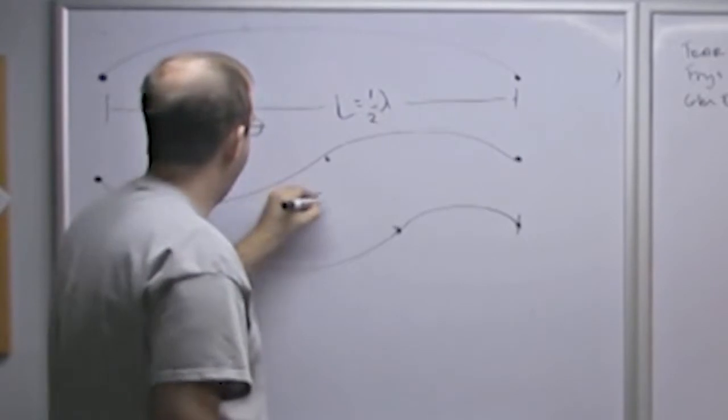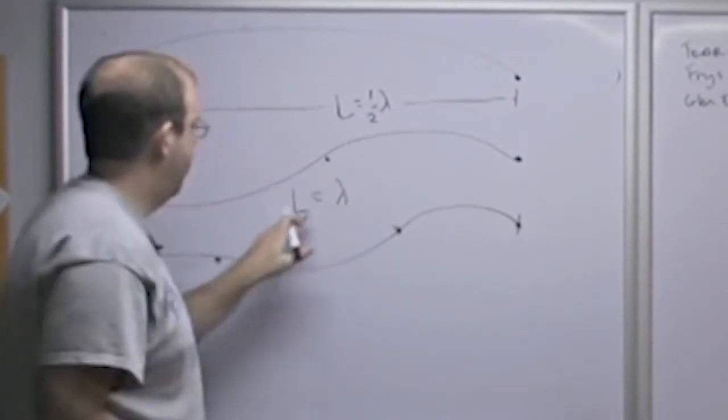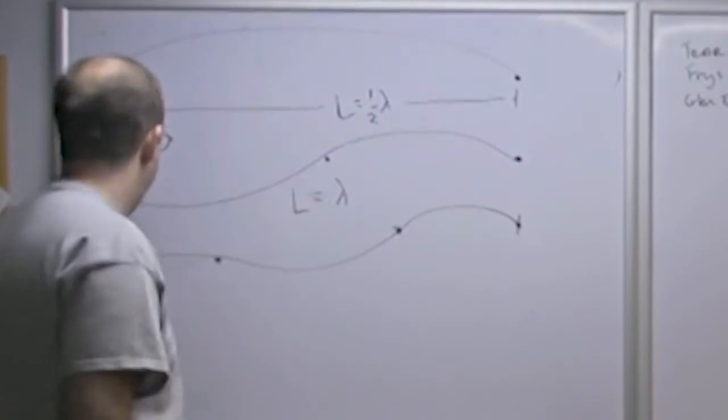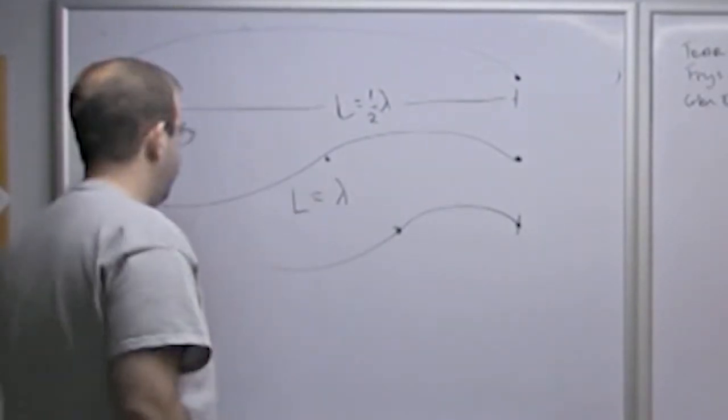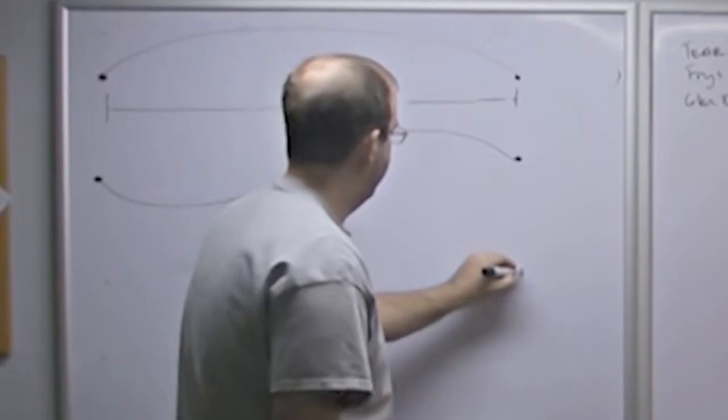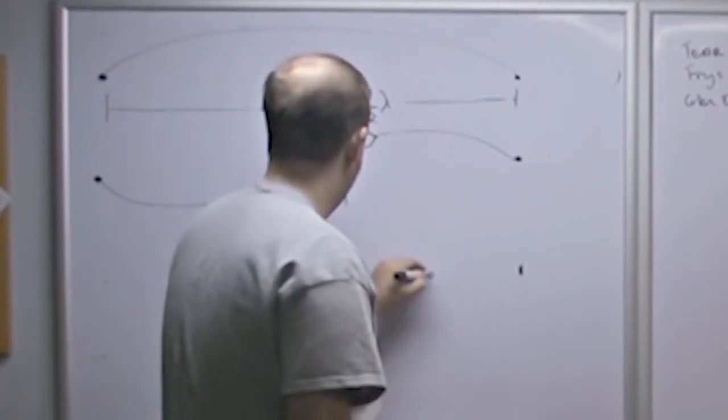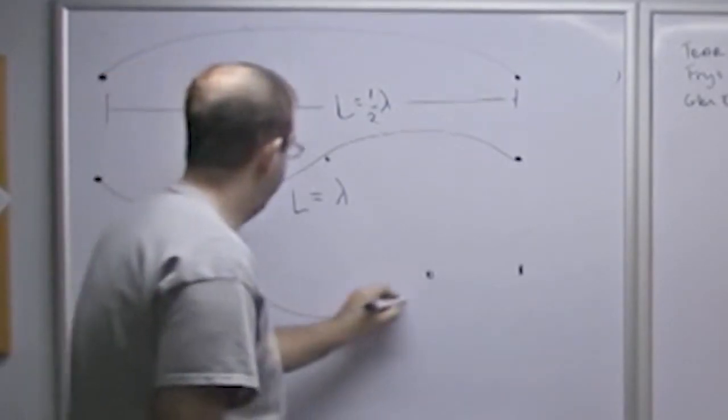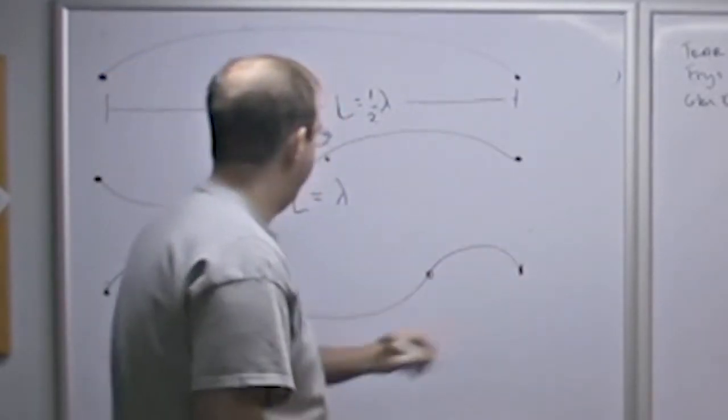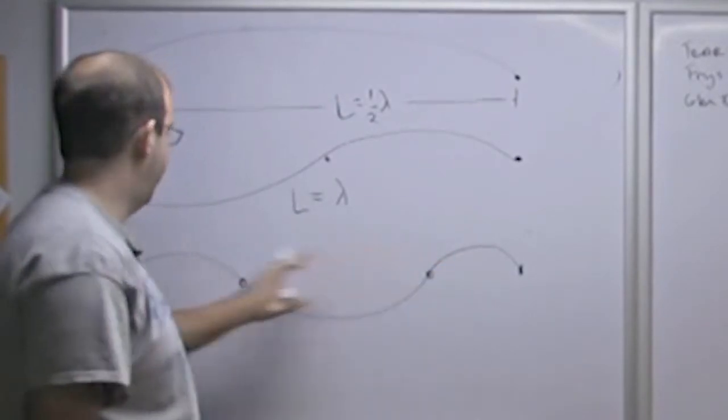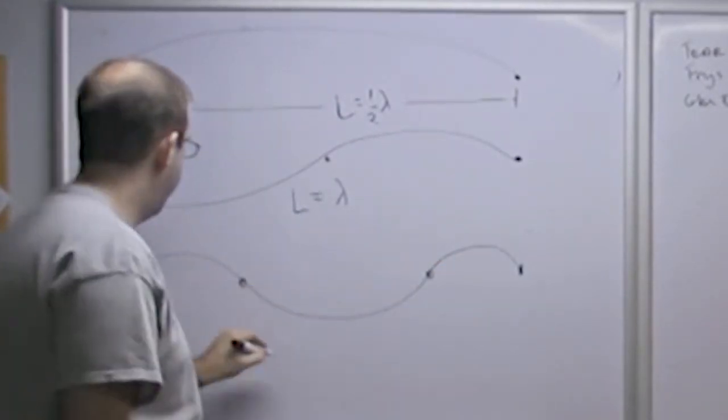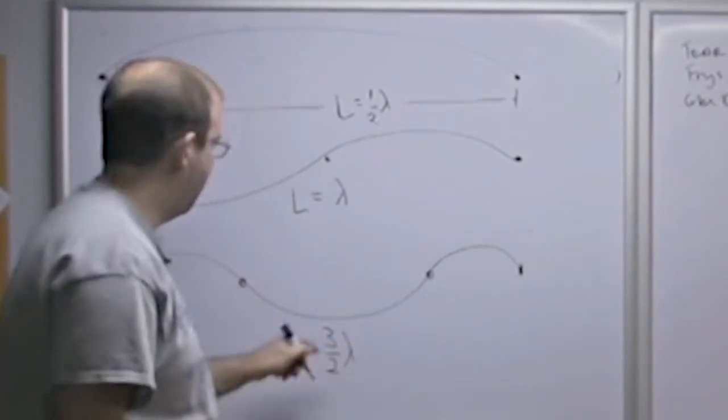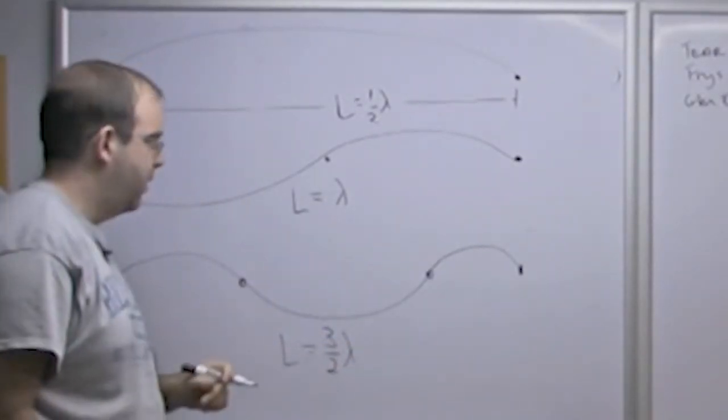So the second one here, L is equal to one wave. Lambda is the symbol we use for wavelength. And then this one here, which I'm going to redraw just because it annoys me. This one here, here's one wave and then another half wave. These should be evenly spaced. But L is essentially equal to three halves lambda because I have a wave and a half here.